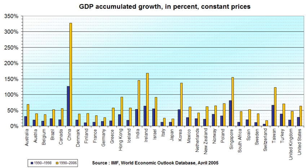Following the Great Depression, economic growth resumed, aided in part by increased demand for existing goods and services such as automobiles, telephones, radios, electricity and household appliances. New goods and services included television, air conditioning and commercial aviation, creating enough new demand to stabilize the work week. The building of highway infrastructures also contributed to post-World War II growth, as did capital investments in manufacturing and chemical industries.